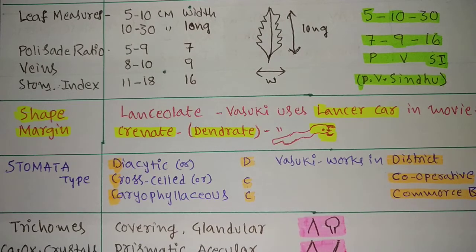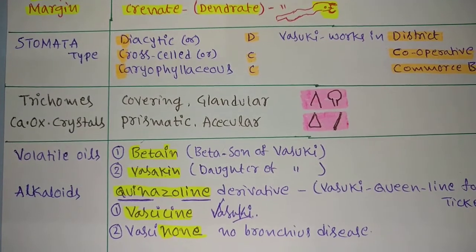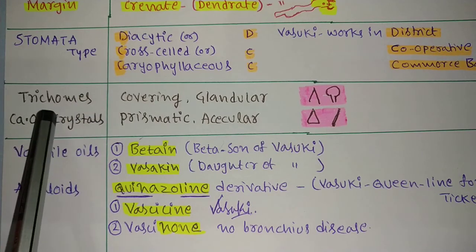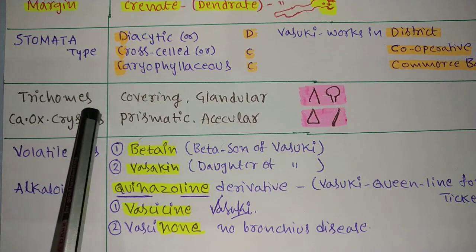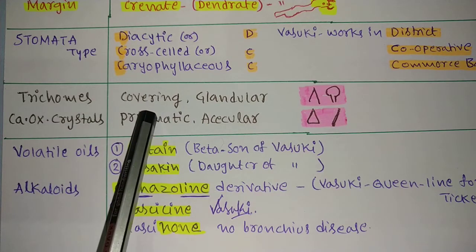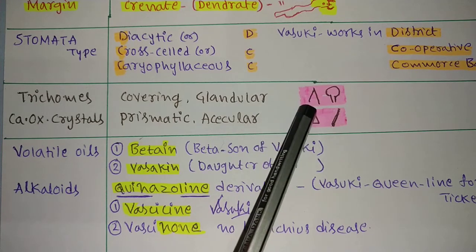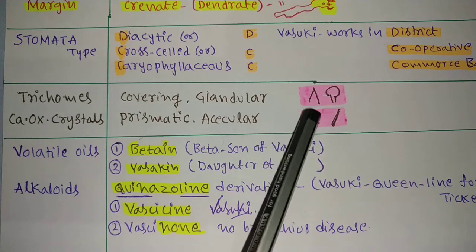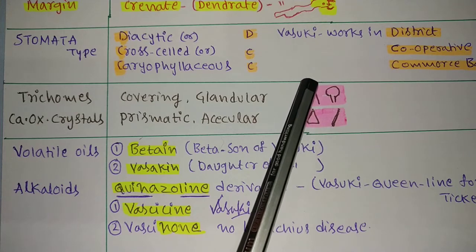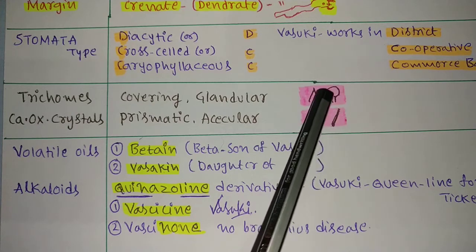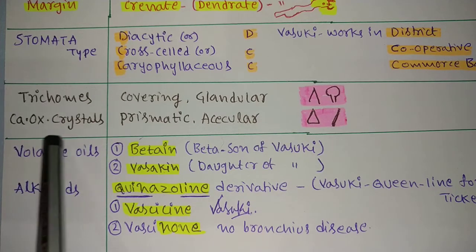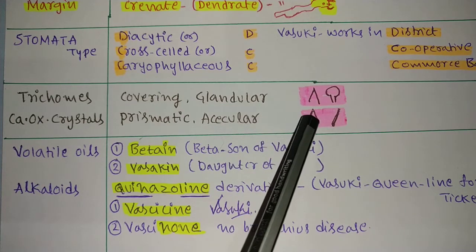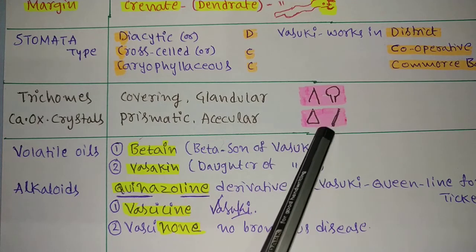Take a screenshot. Trichomes - trichomes means hair-like structure. There are two types of trichomes available for Vasaka: one is covering trichome and glandular trichomes. Here I showed symbols. Keep this impression in your mind - covering and glandular structure. It also consists of calcium oxalate crystals, either prismatic shape or acicular shape. Prismatic means prism, acicular means needle type.